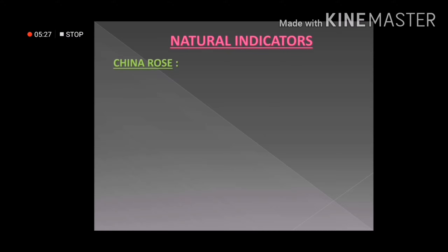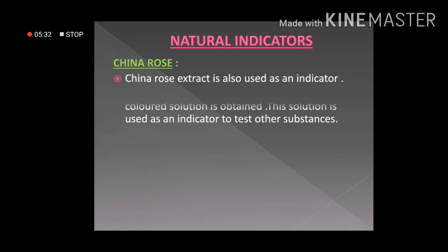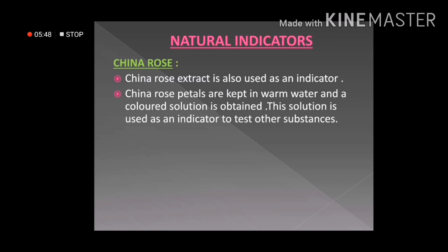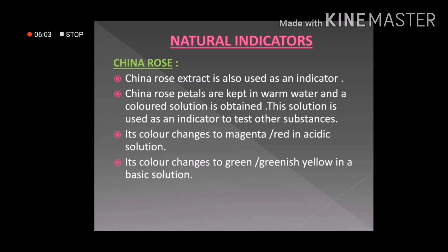Another important natural indicator is china rose. China rose is dipped in warm water and left for some time to obtain a colored solution, which is then used as an indicator. If the color of the china rose solution changes to red in the presence of a liquid, that liquid is an acid. If the color changes to green, the solution is a base.